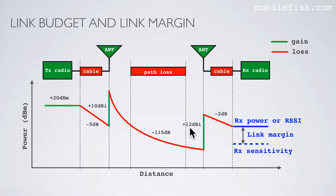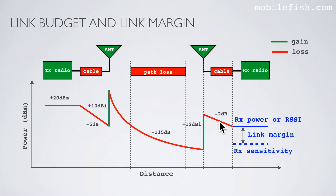The received power is plus 20, minus 5, plus 10, minus 115, plus 12, minus 2, which equals minus 80 dBm. Please note these values are not realistic values — they are just made up.